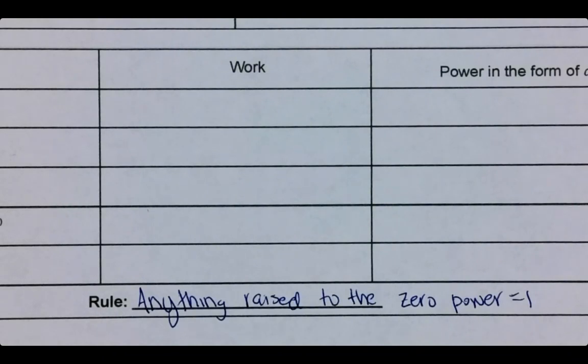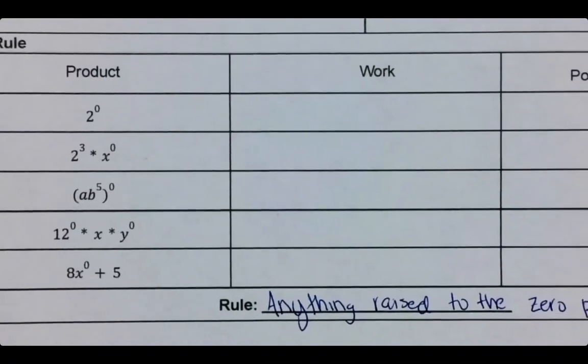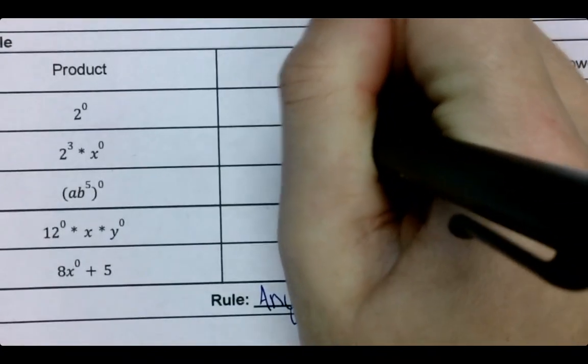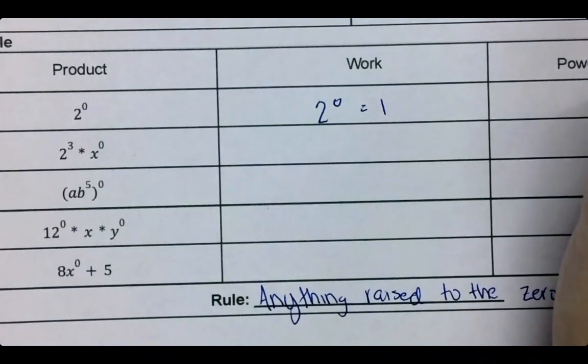And there is a spot for work and you will see why because not all these answers are going to equal one. So if you're like, well, all these are one, let me just do that. They're not. Keep that in mind. So if we look here, this one, well, it's raised to the zero power. So yes. 2 to the zero equals one. So this is just one. That's fine.